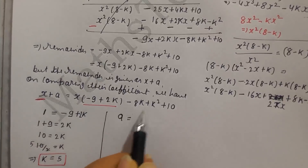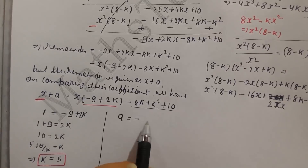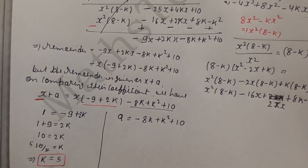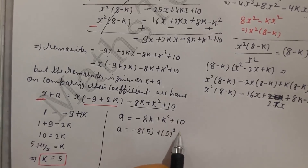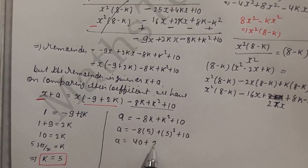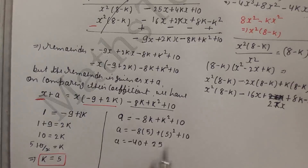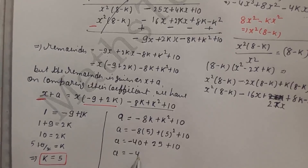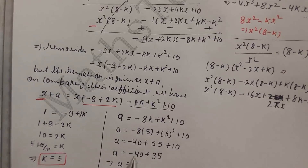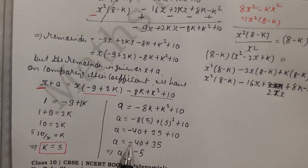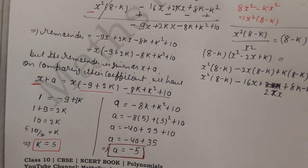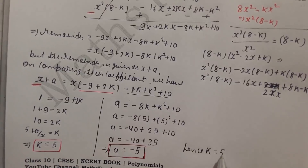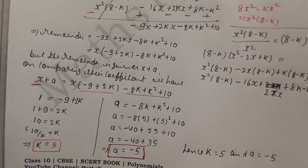Now comparing the constant terms: on the left the constant is a, and on the right it is minus 8k plus k² plus 10. Substituting k equals 5: a equals minus 8 times 5 plus 5² plus 10, which gives a equals minus 40 plus 25 plus 10, so a equals minus 40 plus 35, which means a equals minus 5.